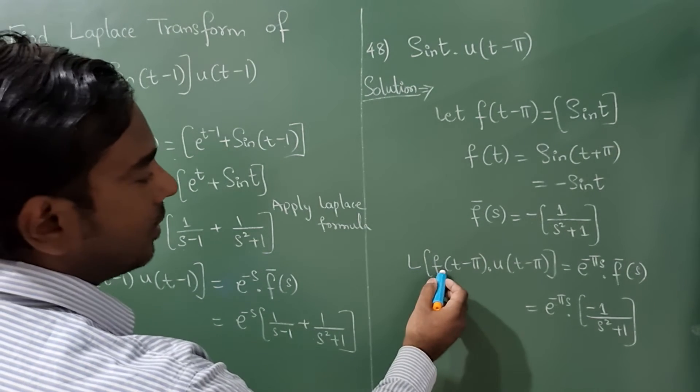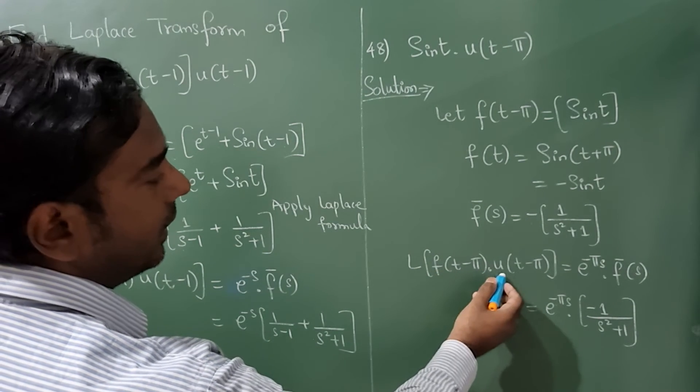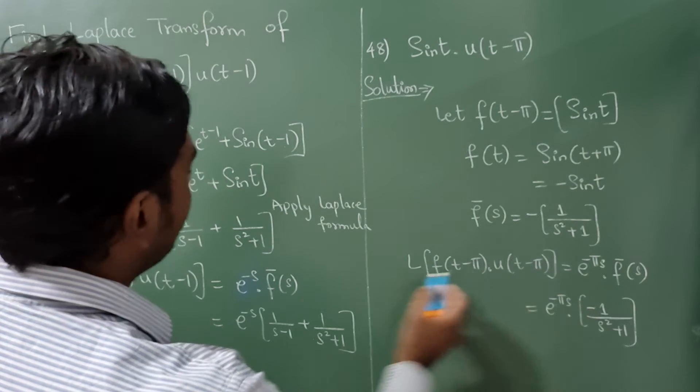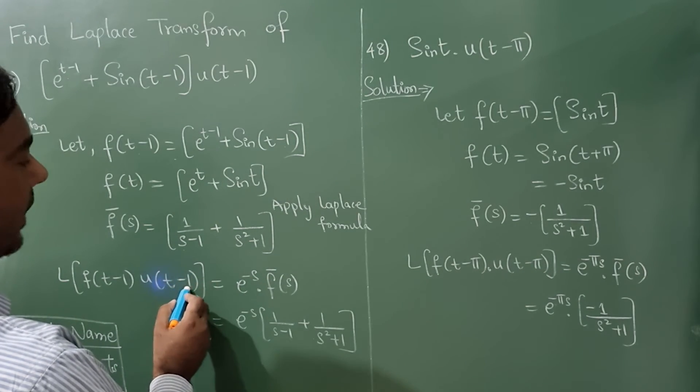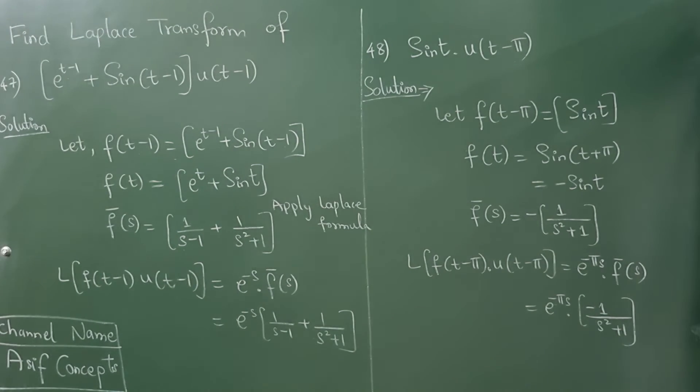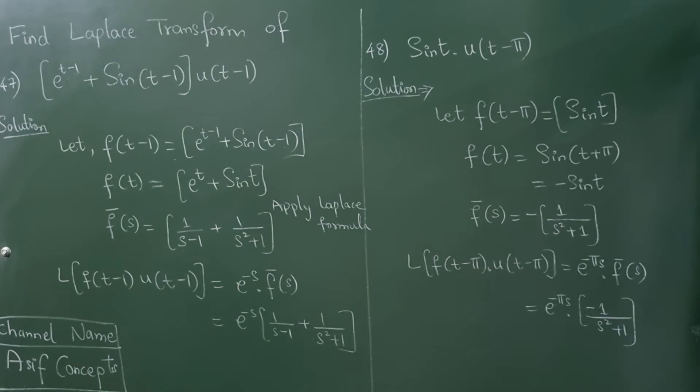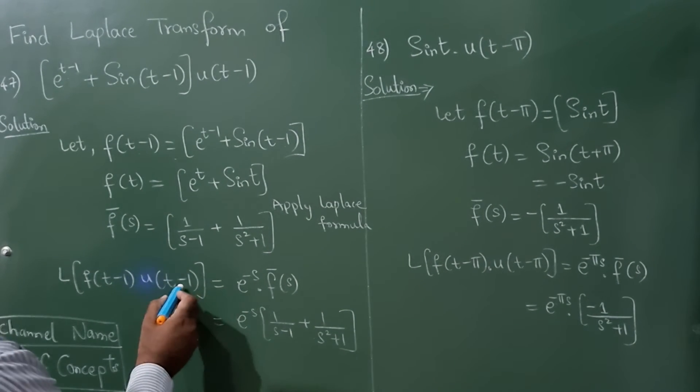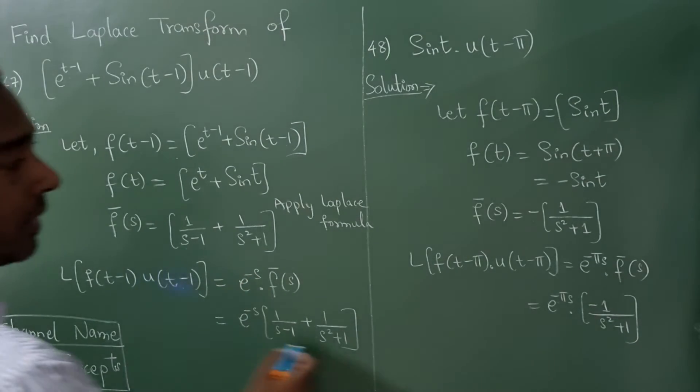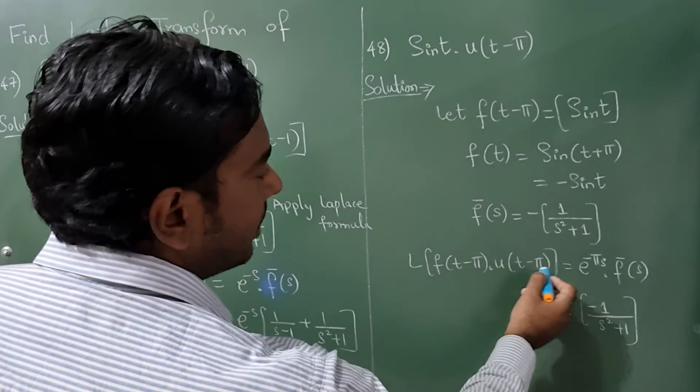Now Laplace of f of t minus pi into u of t minus pi is equal to, here it was t minus 1. Here it was e raise to minus s because of t minus 1. Here it is minus pi. So it is e raise to minus pi into s.